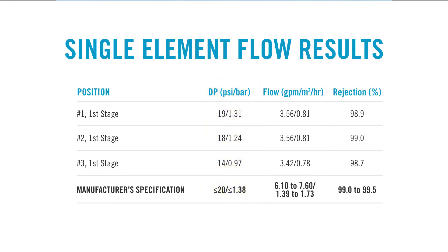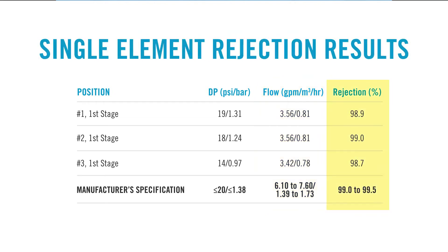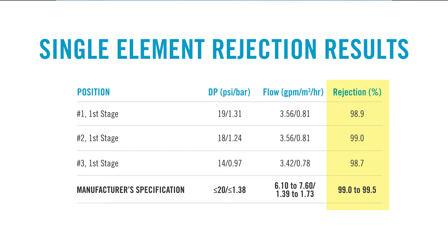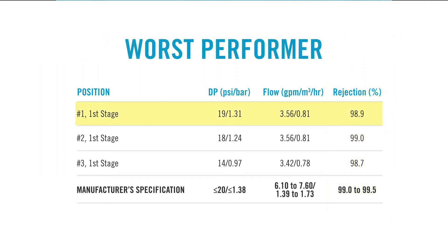We'll also take a look at their flow. The flows were fairly consistent for the first three elements in their system, with about half of their original performance. Another thing we'll look at is the rejection. We'll note that the rejections are similar, but slightly below normal. So let's take a look at the first element from the first stage. We see the delta pressure is 19, the flow is 3.56 GPM, and the rejection is 98.9%. We selected this element because it's the worst performer. So if we can find a solution for this element, we can find a solution for the whole system.